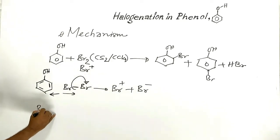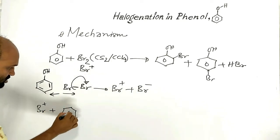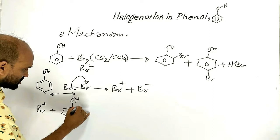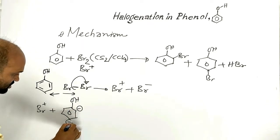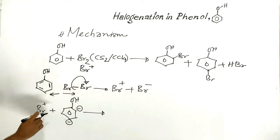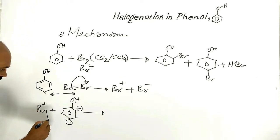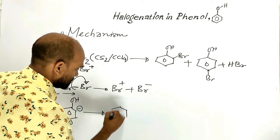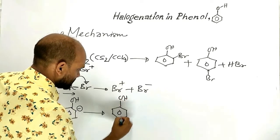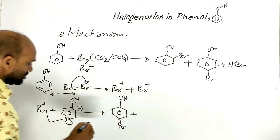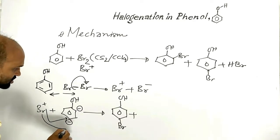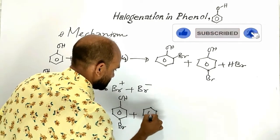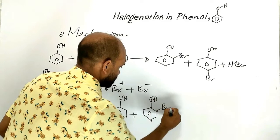This bromine cation combines with phenol. The hydroxyl group increases electron density at the ortho positions and at the para position. When the bromine cation attacks the para position, we get para-bromophenol. When the bromine cation attacks the ortho position, we get ortho-bromophenol. Hydrogen atoms from the ortho and para positions go out as protons.